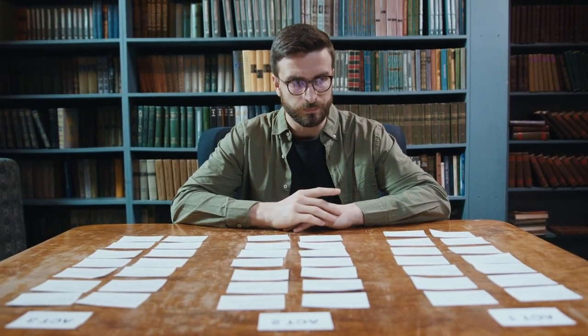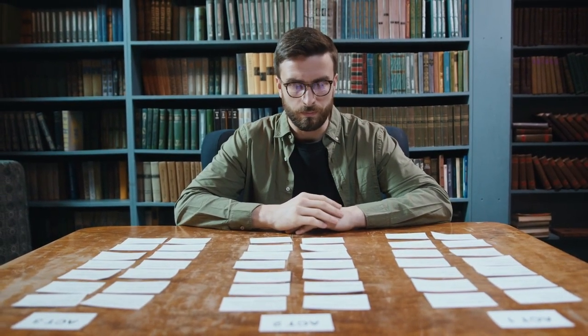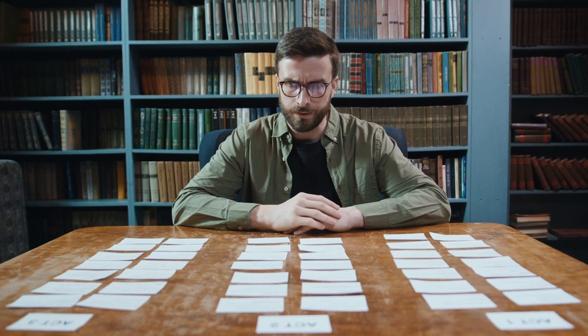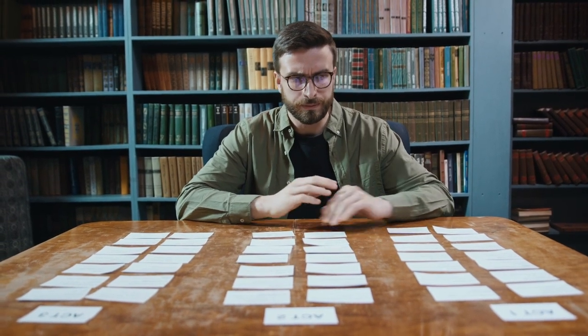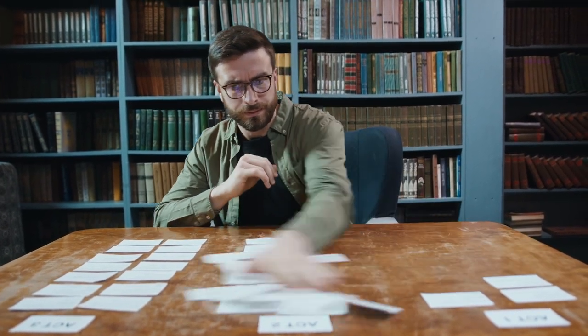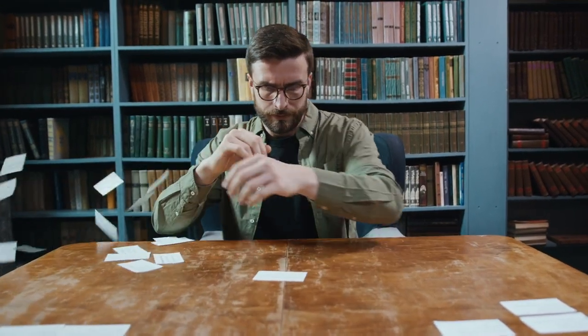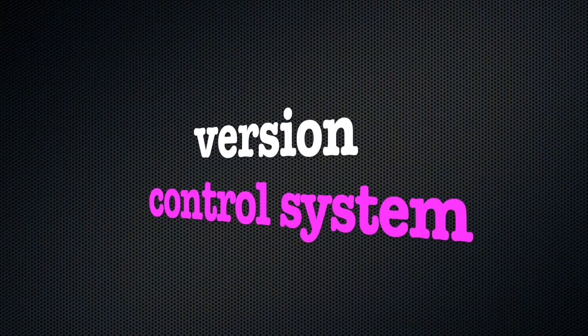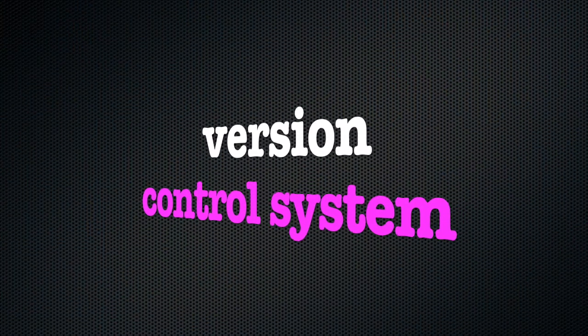What we need is some sort of system to control all of these different versions somehow. Thankfully, such systems exist, and software created specifically for this task are called version control systems. Git is such a version control system, but there are others too. Let's meet a few of them.